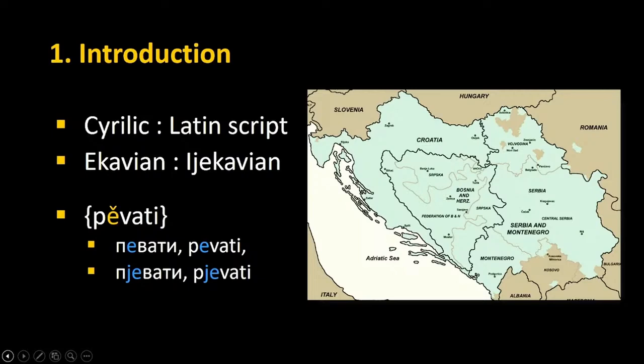This is very important for the creation of new resources, because they are mostly intended for human users who need information about the Ekavian or Ijekavian variant, or information presented in the Cyrillic or Latin script. I will also mention some Croatian resources because it's a very closely related language, and due to the lack of good quality resources for Serbian, non-native speakers can sometimes use Croatian resources.